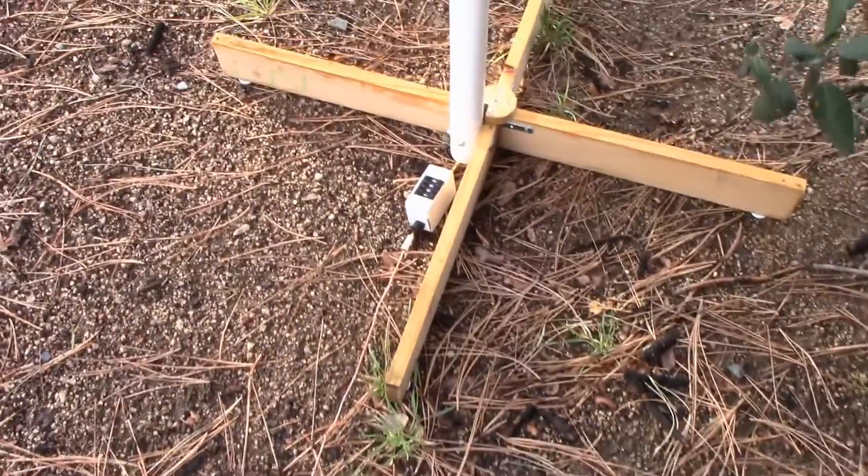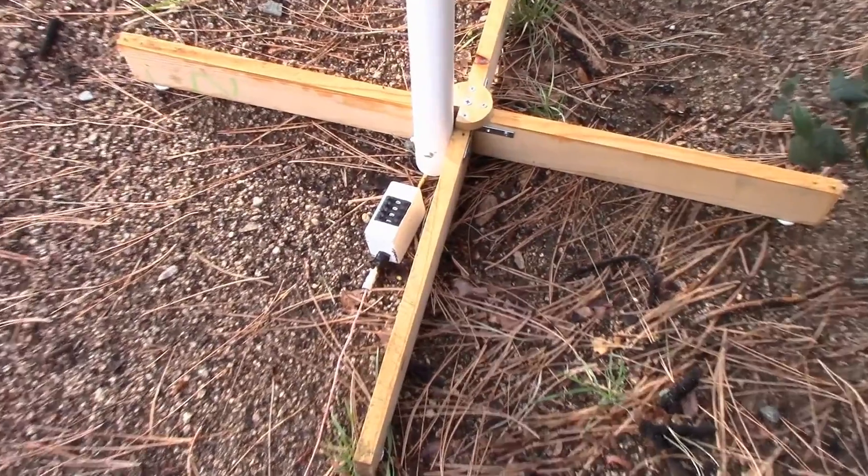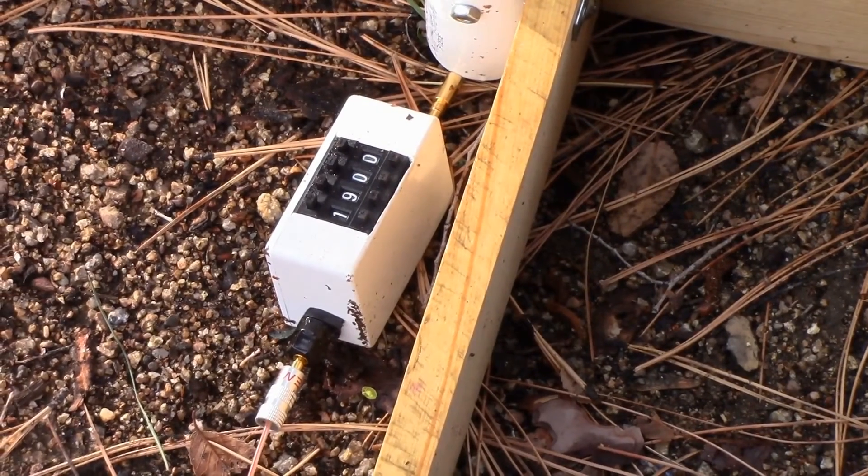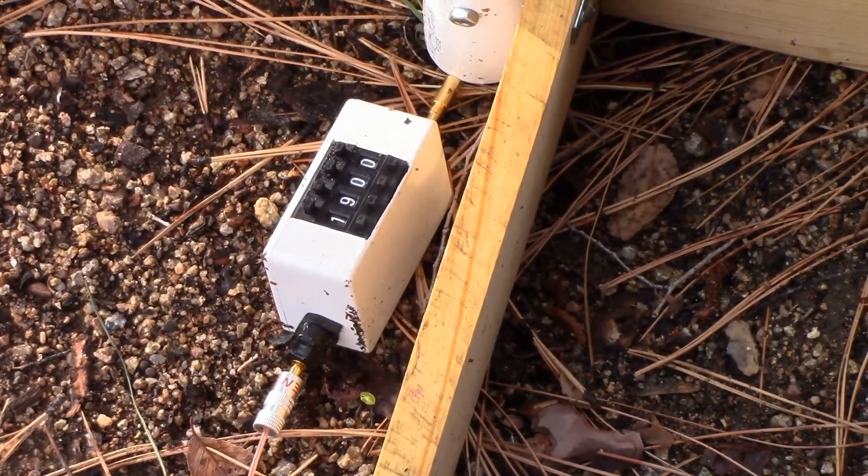On the other end of the antenna, we have the variable resistance box. Here we set an appropriate termination resistance to get the proper signal null. Again, the antenna wires are attached at each end.